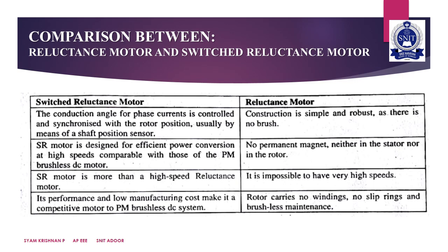For the reluctance motor, there is no permanent magnet. An SR motor operates at higher speeds than a high-speed reluctance motor, and in a reluctance motor it is impossible to achieve very high speeds.